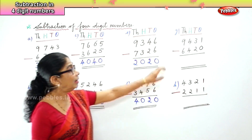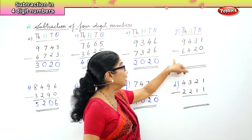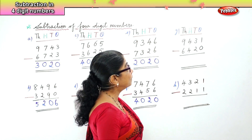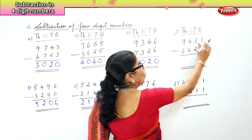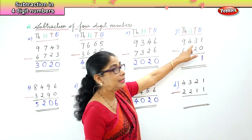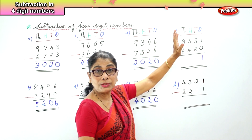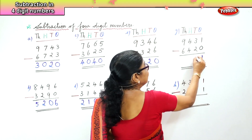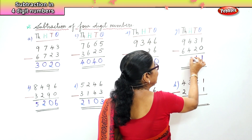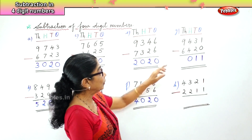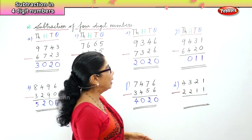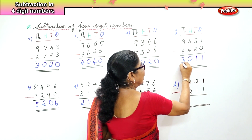Let's go to another sum: 9,431 minus 6,420. In the ones place, 1 minus 0 is 1 — any number take away 0 is the number itself. In the tens place, 3 tenths take away 2 tenths — 3 minus 2 is 1. In the hundreds place, 400 take away 400 — 4 minus 4 is 0. In the thousands place, 9,000 minus 6,000 — 9 take away 6 is 3.